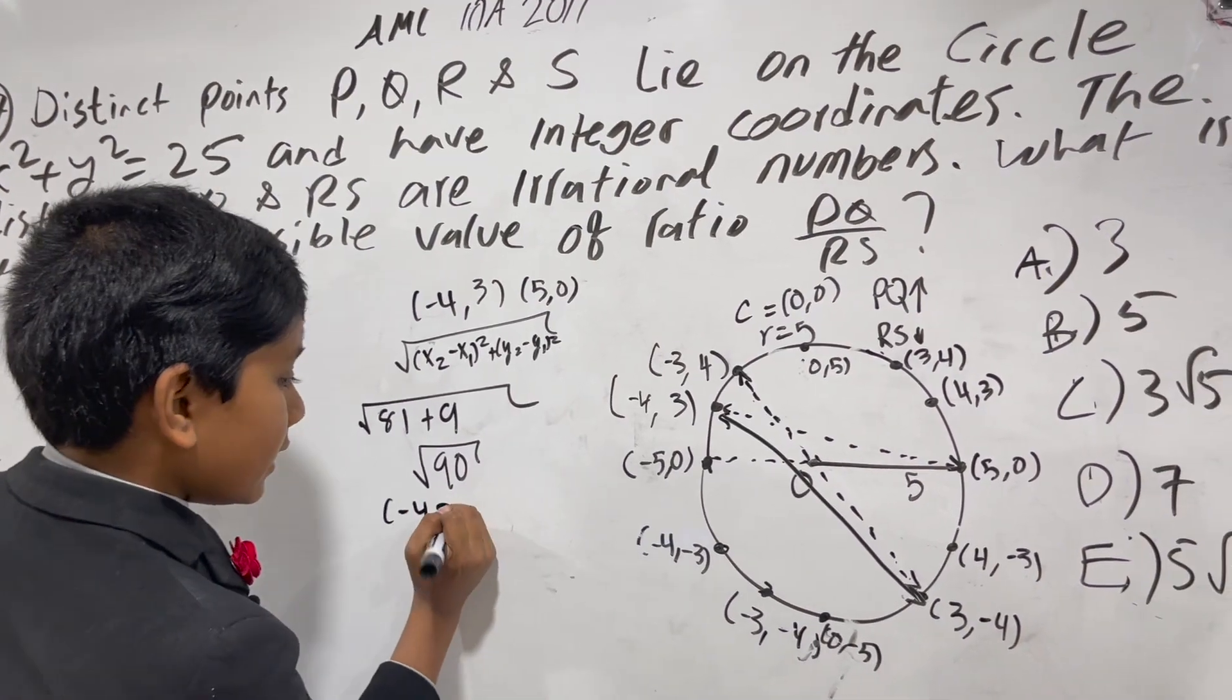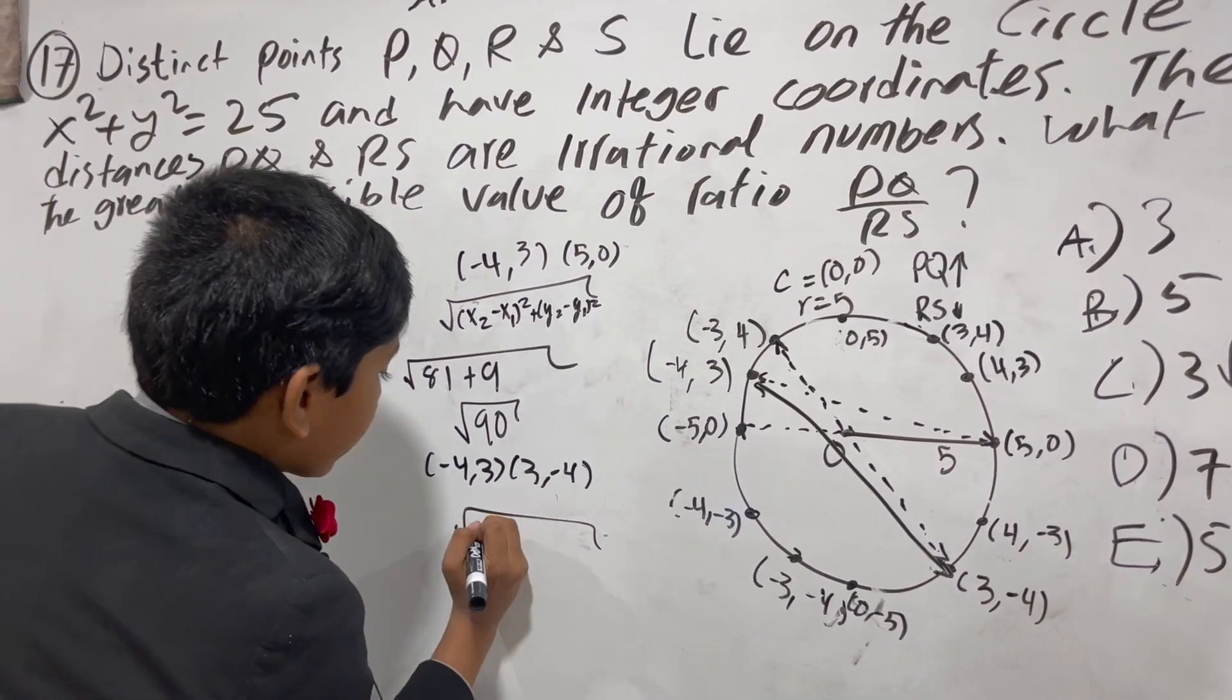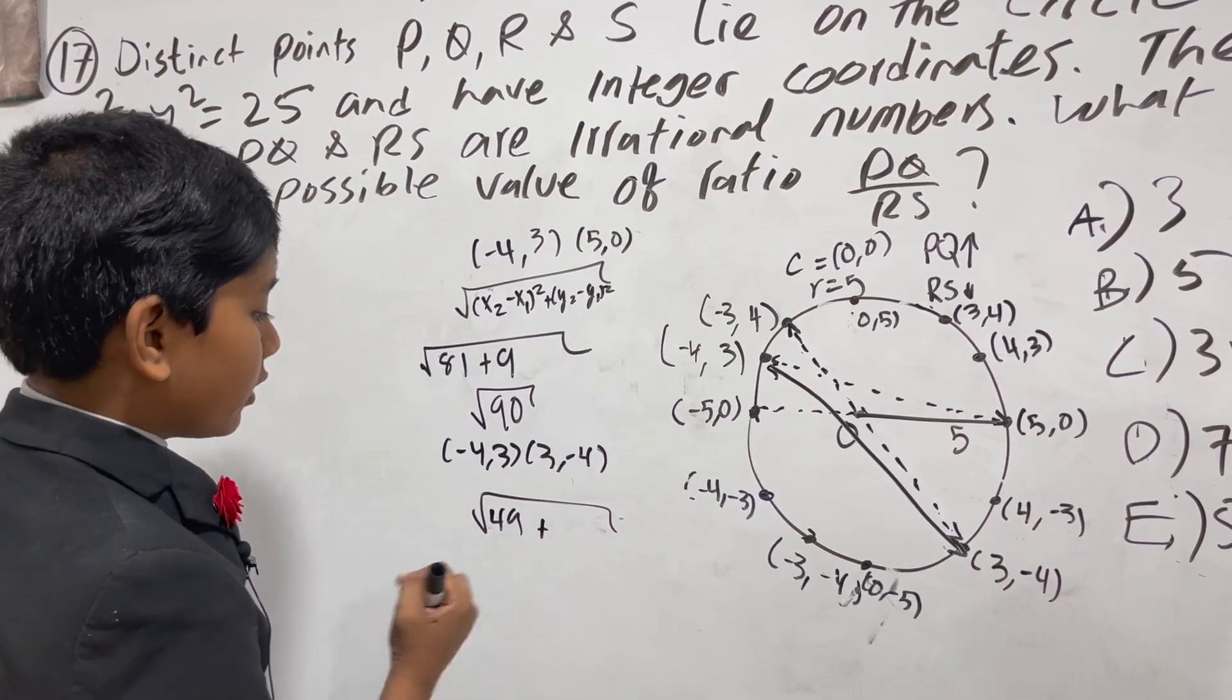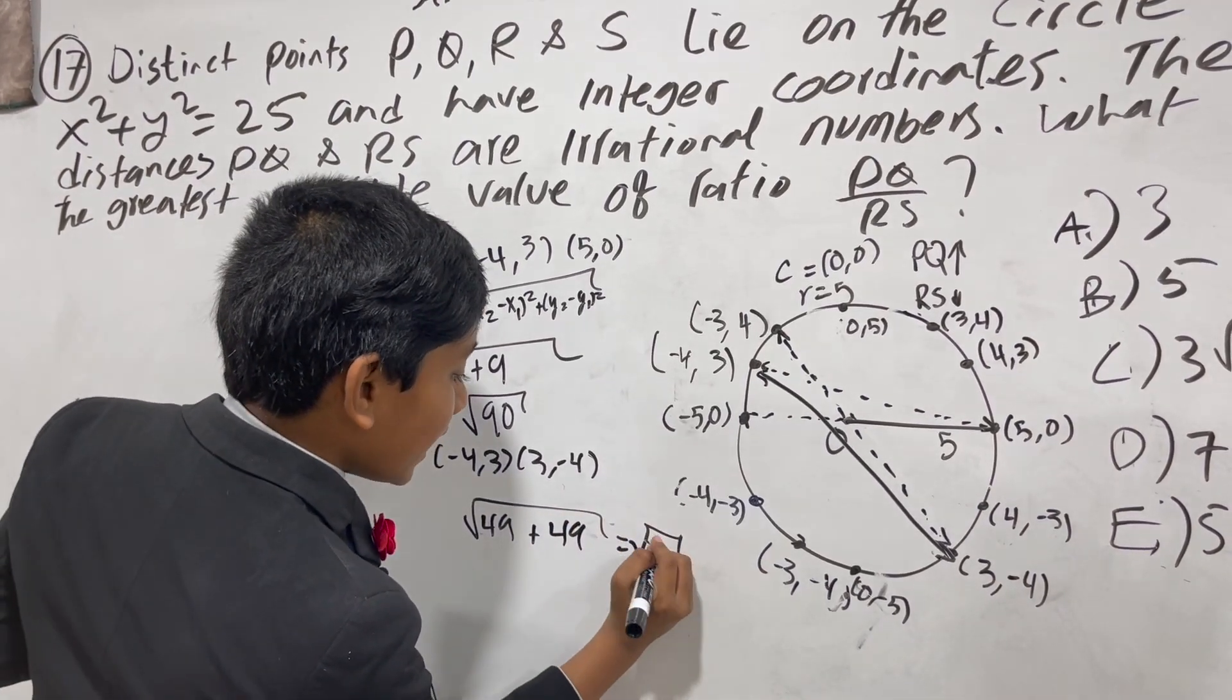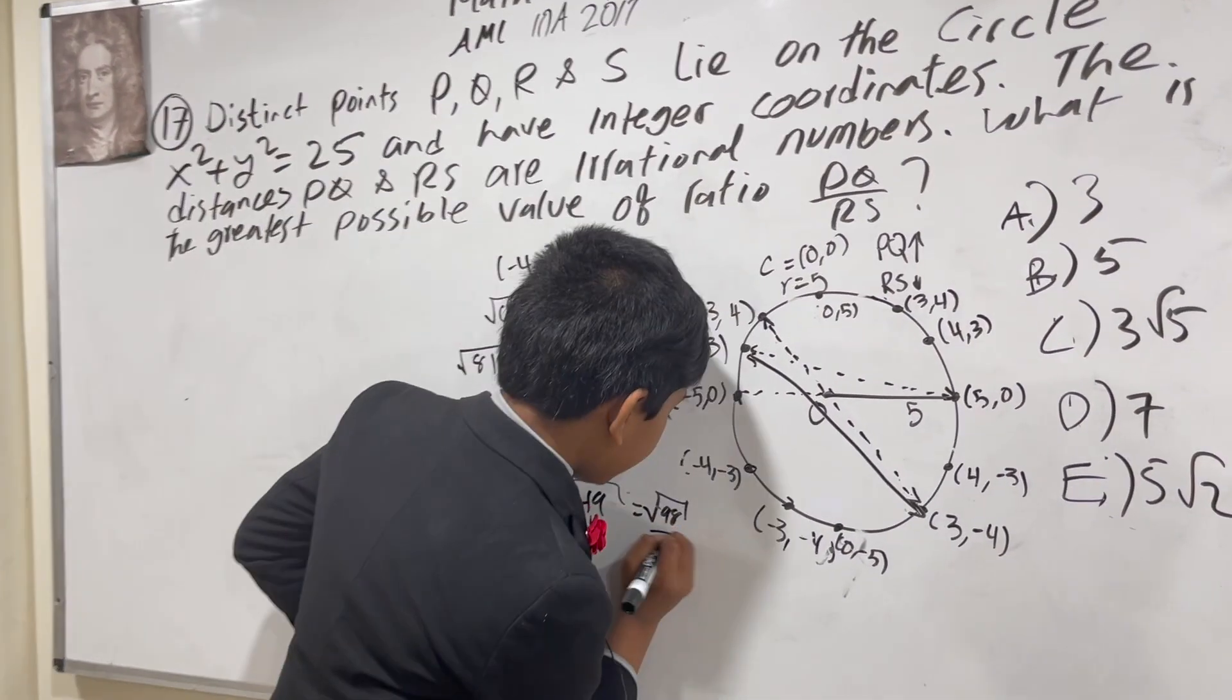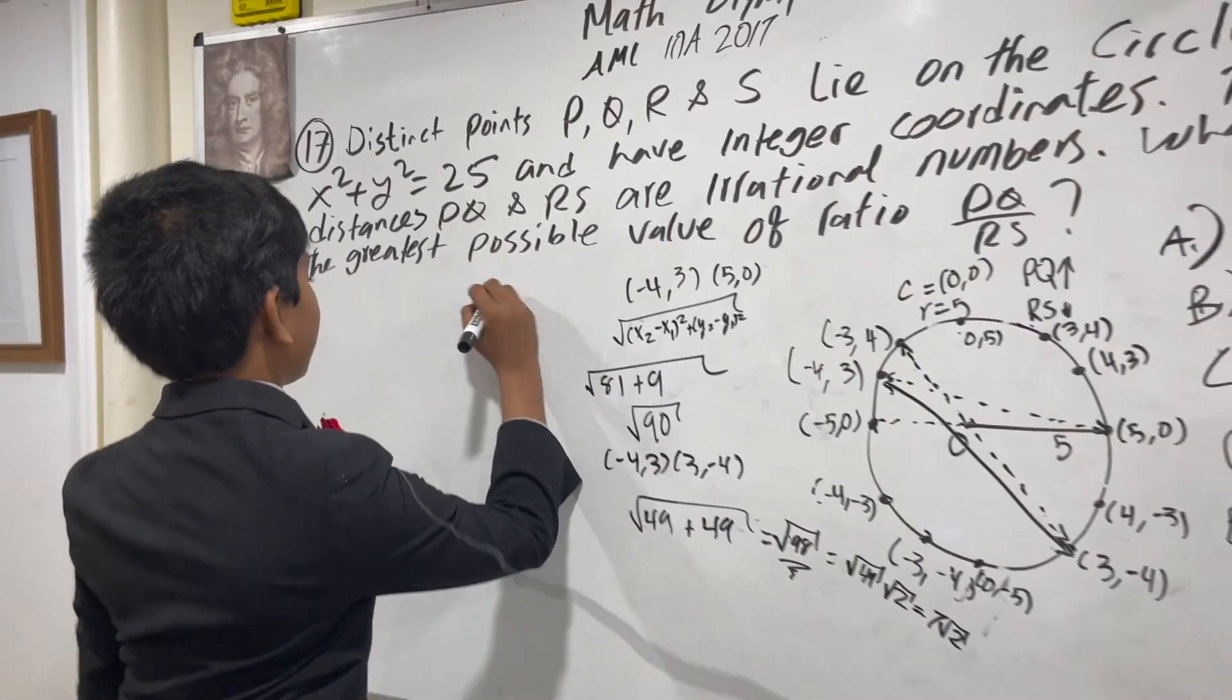We have (-4,3) and (3,-4). We just square root it. x2 minus x1, that becomes 7 squared is 49. So we have y2 -4 minus y1 3 squared is -7 squared, which is 49. And that becomes root 98, which is almost 100, a diameter, but not exactly. So it's the highest thing we can get here. And square root of 98 is root 49 root 2, or 7 root 2. So that's the highest value for PQ.